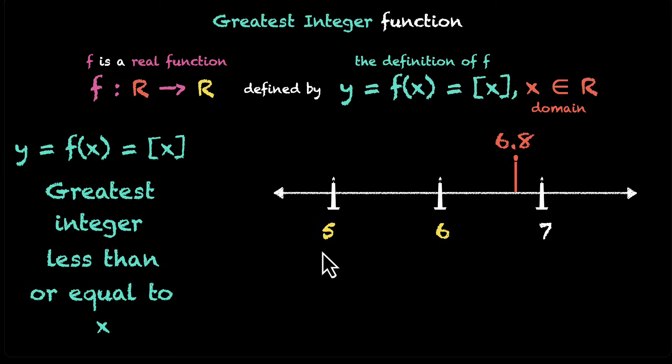In fact, they're not just 5 and 6. There could be many more: 4, 3, 2, and 1. All of these integers are less than 6.8. In fact, now that I think about it, there are infinite integers that are less than 6.8. Well, the greatest is definitely 6.